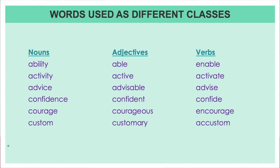Let's take another example — 'advice.' The adjective would be 'advocate', and the verb form would be 'advise' with an 's.' So the noun form is 'advice' with a 'c', and the verb form would be 'advise' with an 's.'